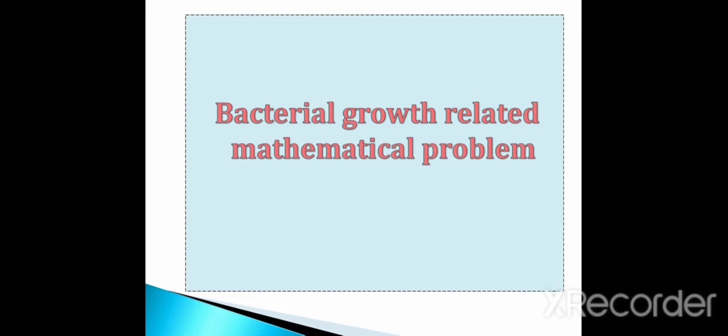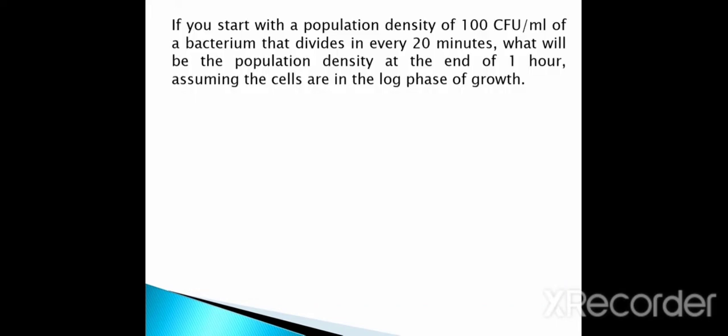Stay tuned to this video. The first question: if you start with a population density of 100 CFU per ml of a bacterium that divides every 20 minutes, what will be the population density at the end of one hour, assuming the cells are in the log phase of growth?